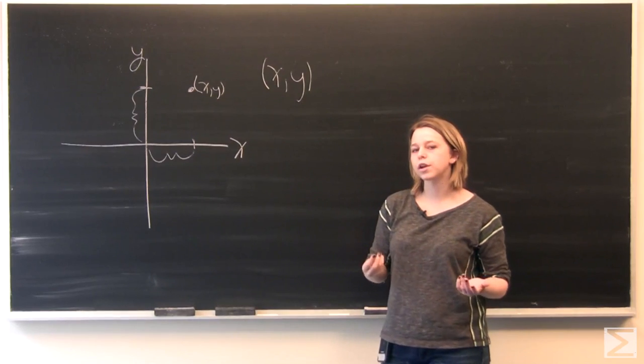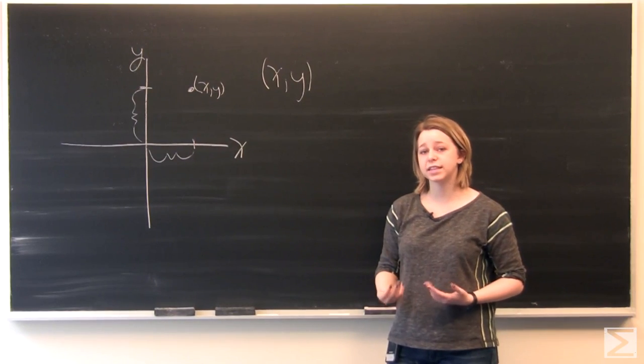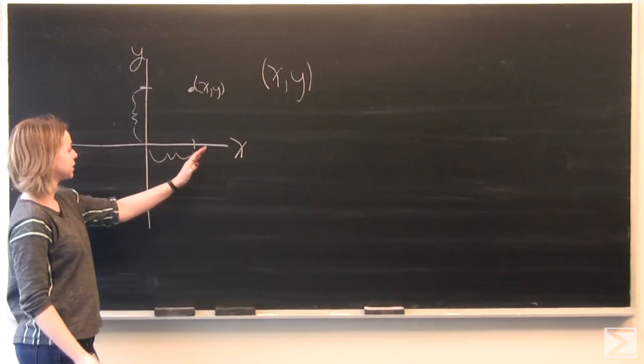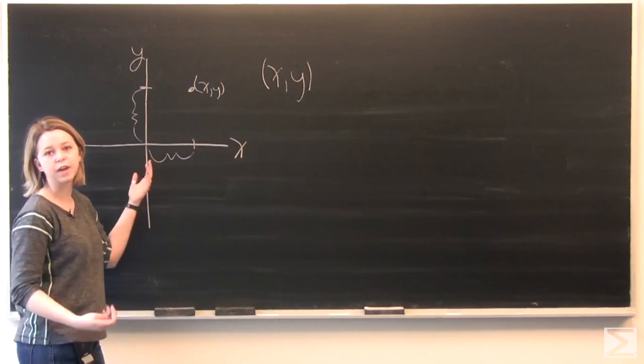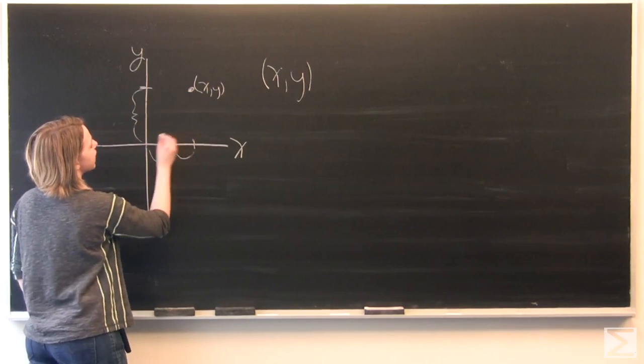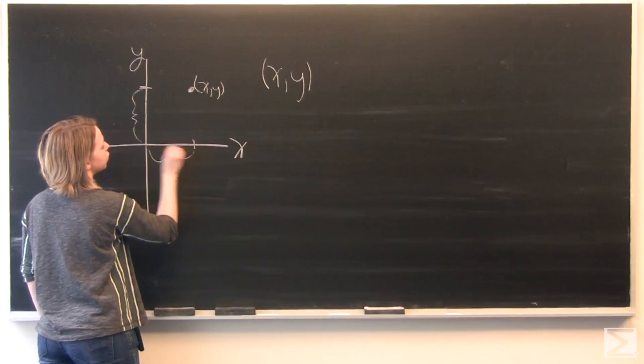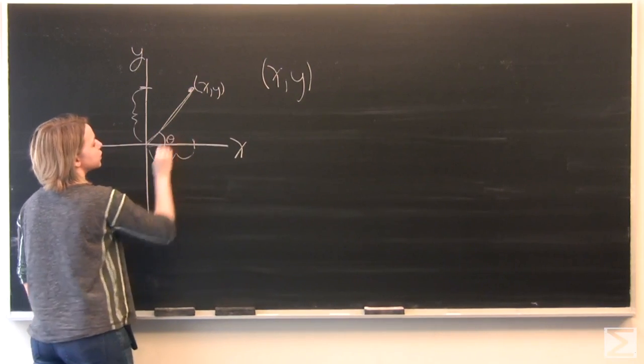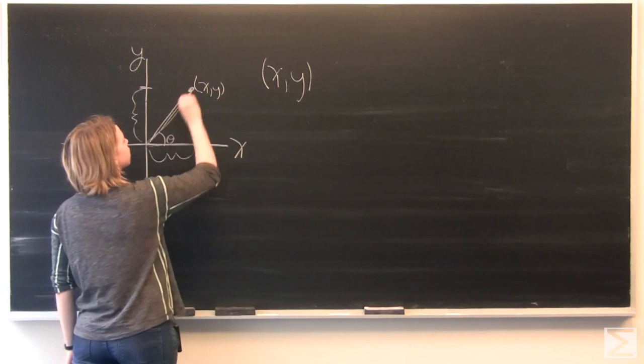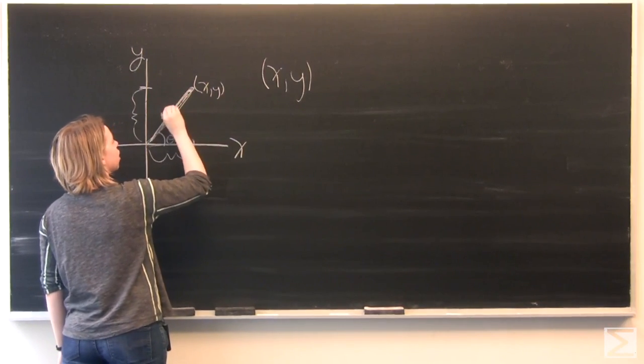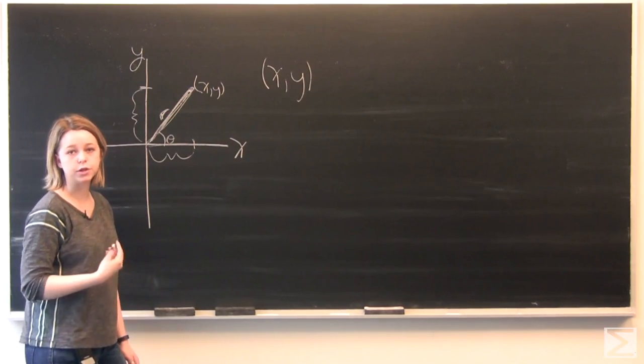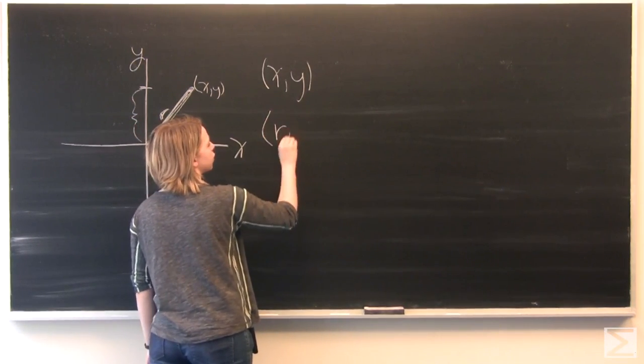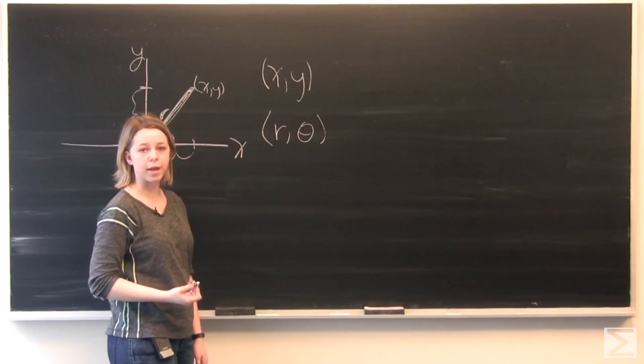Polar coordinates are just a different way of expressing the same point. Instead of moving along the axes to find your point, we take an angle from the origin. We use our angle from the origin and our distance from the origin R in order to locate our point. Instead of X and Y, we've got R theta for our ordered pair.